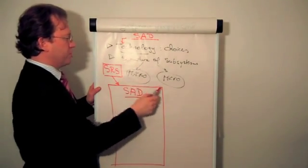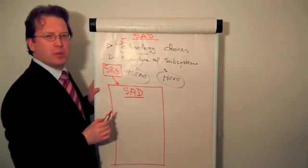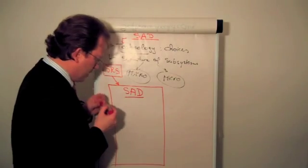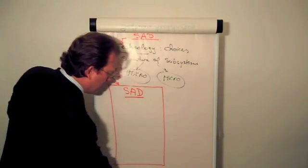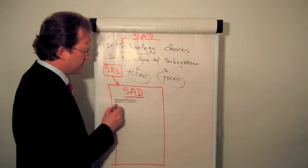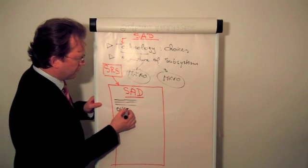And now we have to talk about the macrostructure and the microstructure for the solution we provide to the problem stated into the software requirements specification. So what do we do here? It's interesting to say this is the software architecture document.